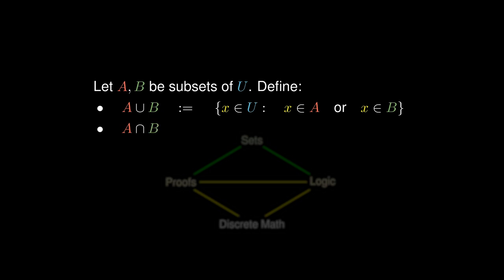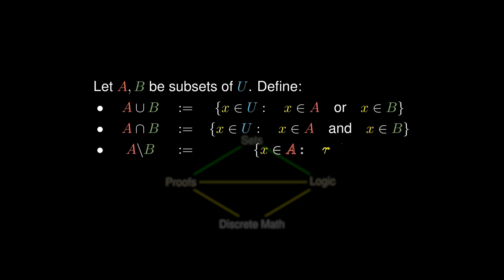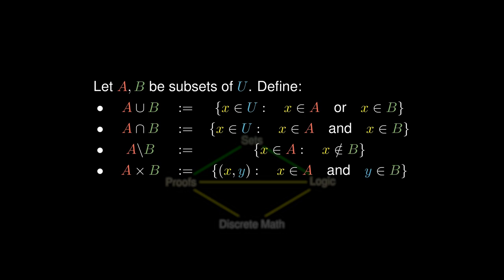The intersection consists of elements that belong in both A and B. The set difference contains elements in A that do not belong to B. The Cartesian product consists of pairs of elements, where objects in the first coordinate belong to A and objects in the second coordinate belong to B. Finally, the power set of A consists of all subsets of A.